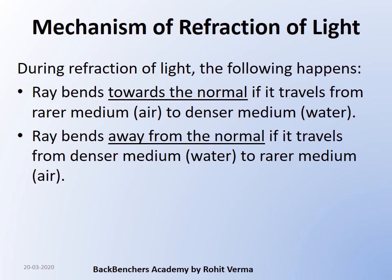When a ray of light travels from a rarer medium to a denser medium — like from air to water — air has lots of space between molecules, whereas water has less space because the density is high. When the ray of light travels from air to water, it has less space, so the ray bends towards the normal. The normal is a perpendicular imaginary line drawn to the surface at the point where the ray strikes — in simple words, normal means perpendicular. Instead of bending away from the normal, the ray bends towards it.